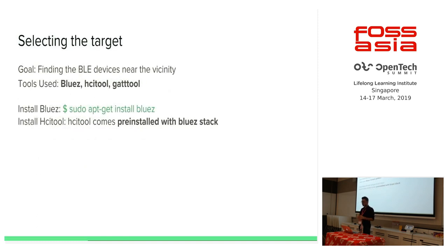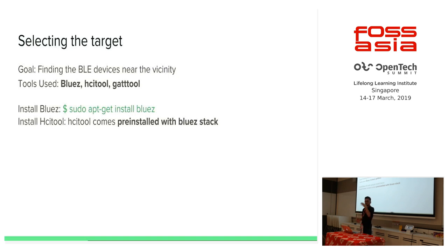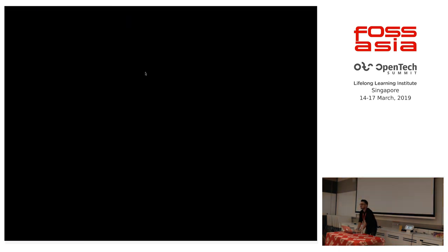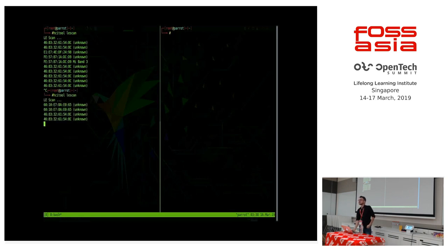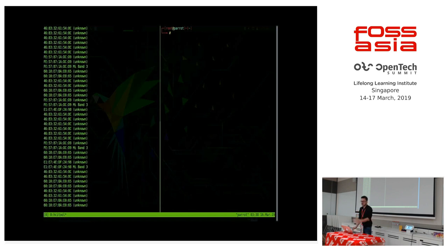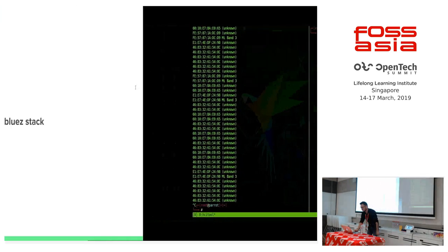Step 0 is selecting the target — finding BLE devices near you. If you're on Kali or any Linux distribution, you can use HCI tool after installing the BlueZ stack. On Android, you can use NRF Connect; on iOS, you can use LightBlue or NRF Connect. You can go to the Play Store or App Store right now and download these apps to scan nearby BLE devices. Using HCI tool with a LE scan command, you'll see all devices in your vicinity — fitness trackers like MI Band and others will show up there.